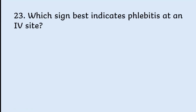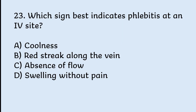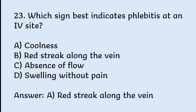Which sign best indicates phlebitis at an IV site? Options: coolness, red streak along the vein, absence of flow, swelling without redness. Correct answer is red streak along the vein.